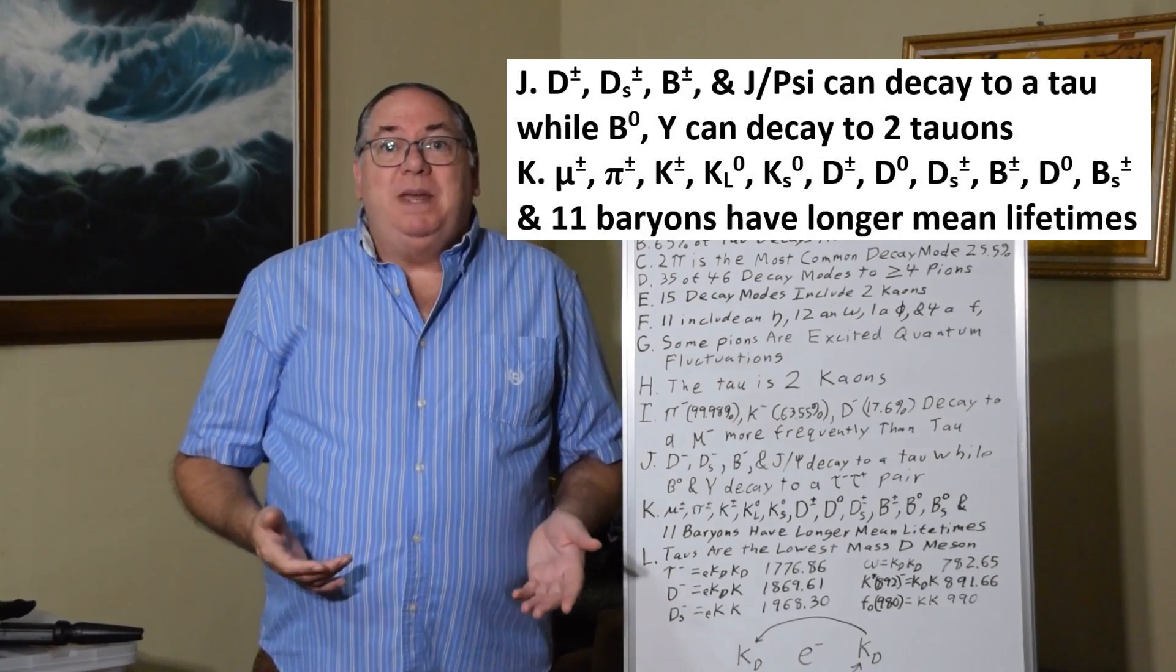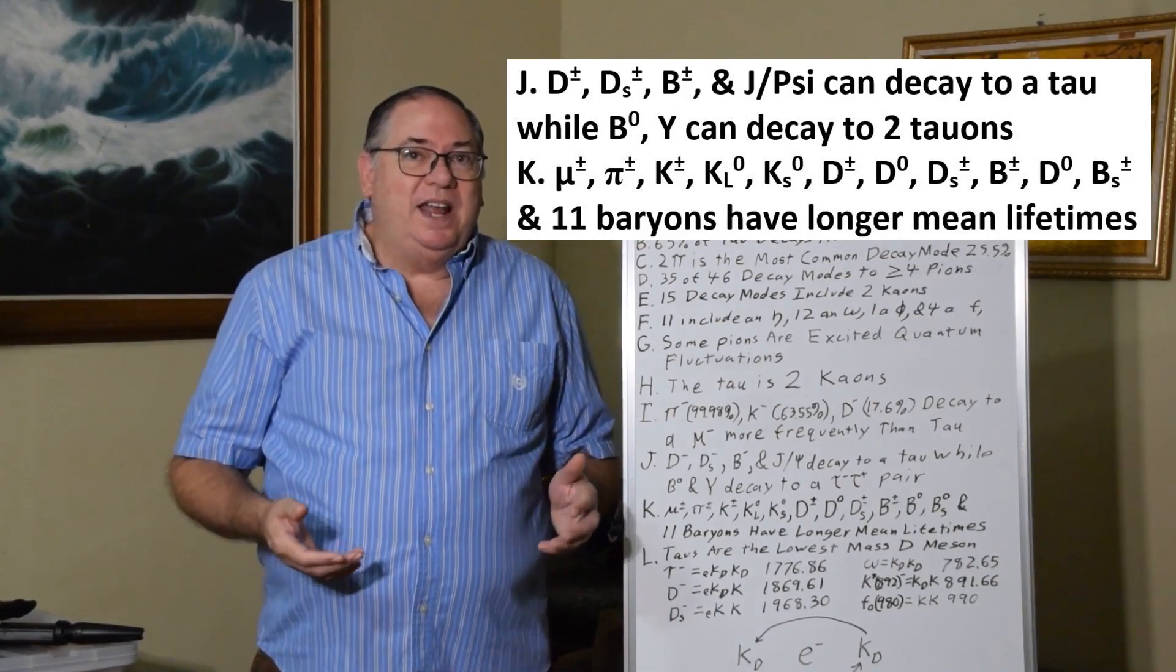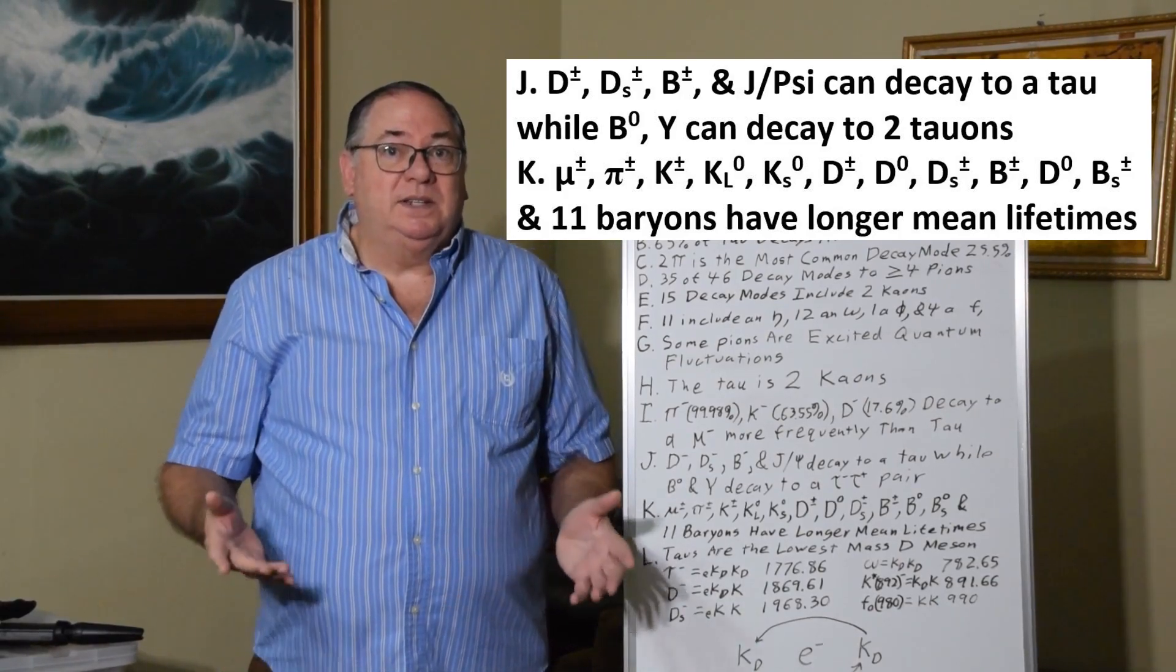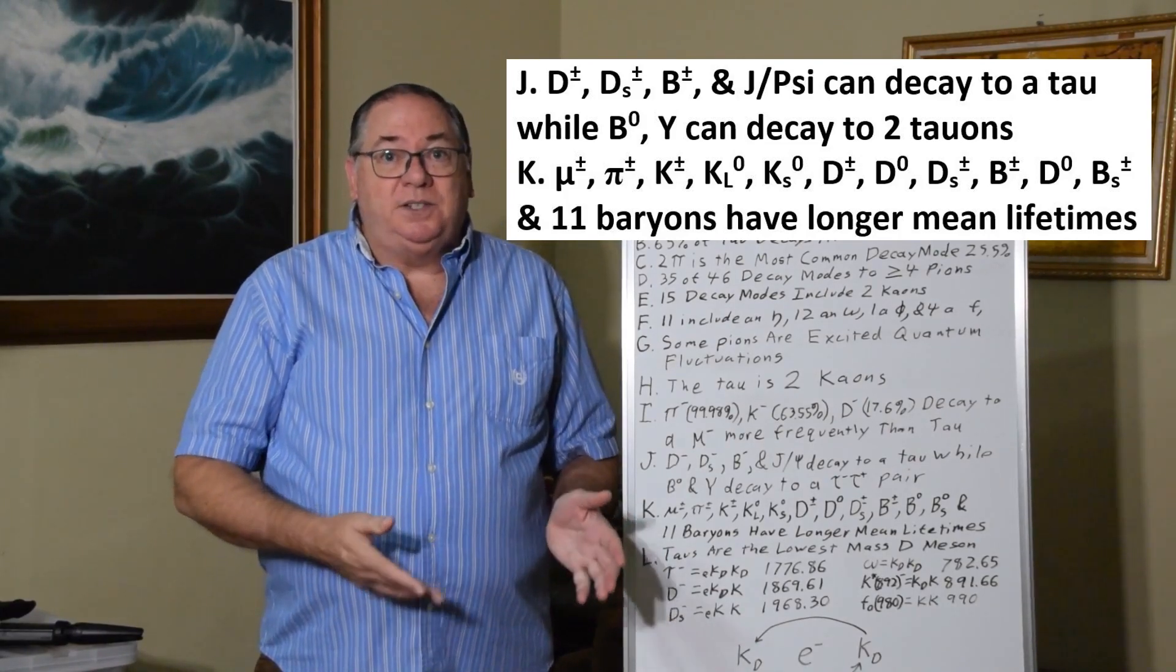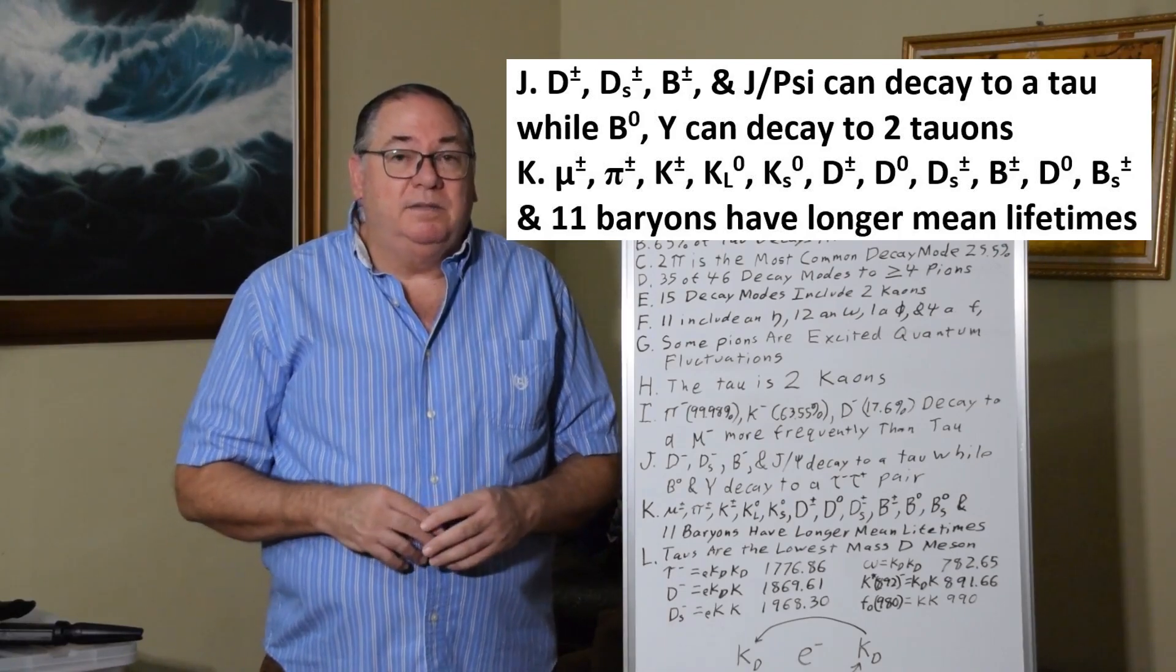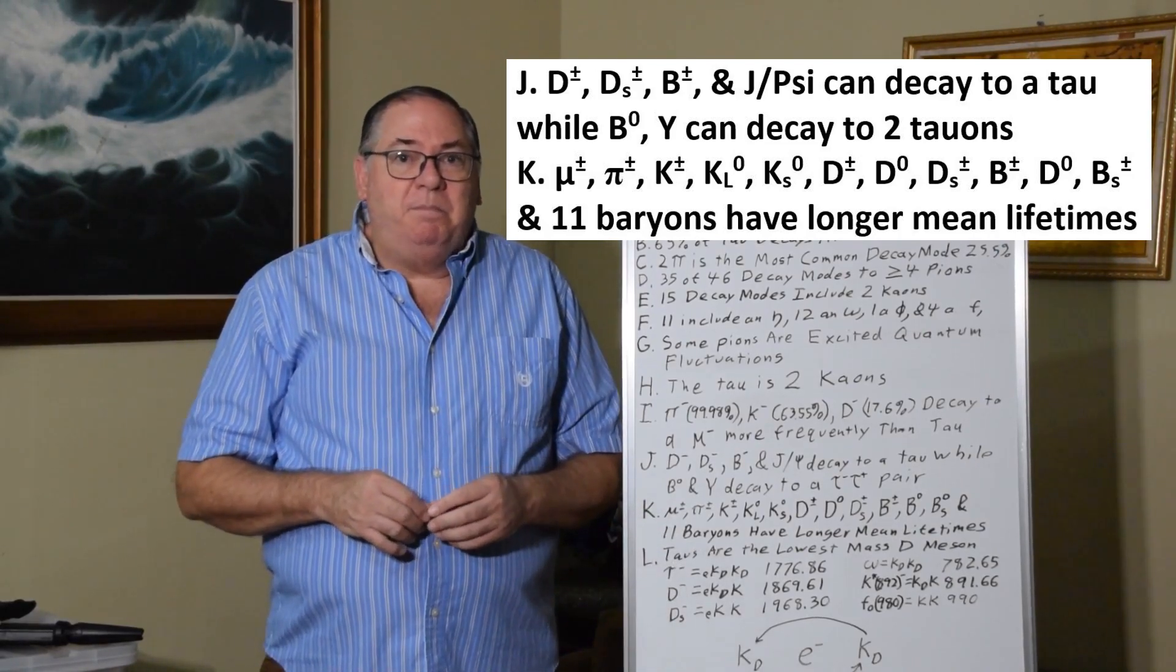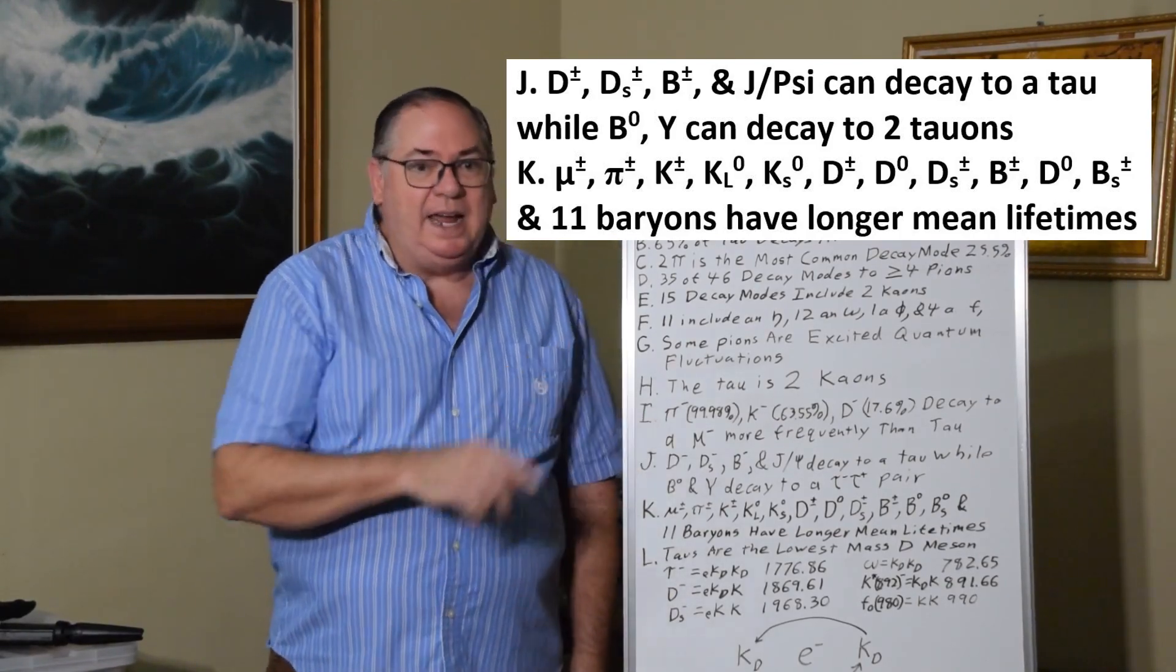And then we can look at the mean lifetime. You would think that if it's an elementary particle, that it would be special, and it would last longer, it would exist longer. And in the case of the muon, that's true. The muon is the longest lived unstable resonance. But the tau is not.